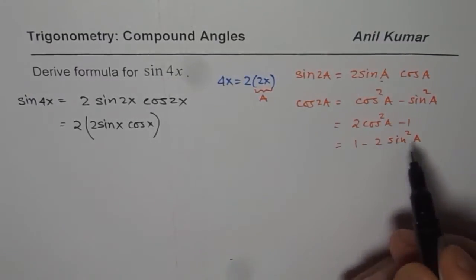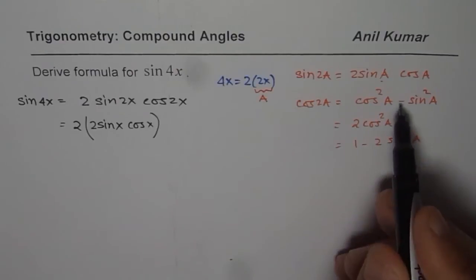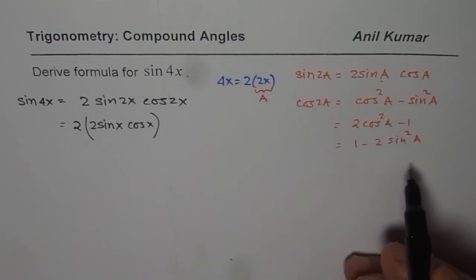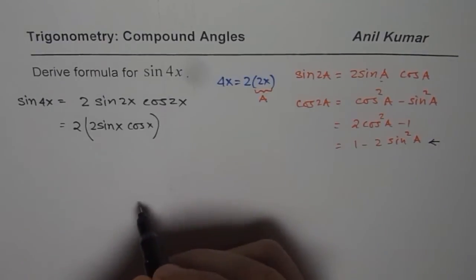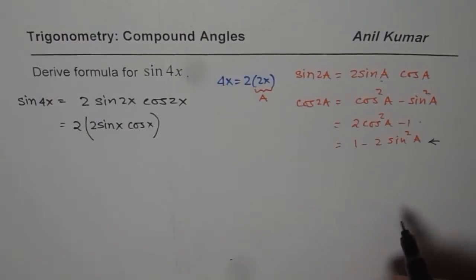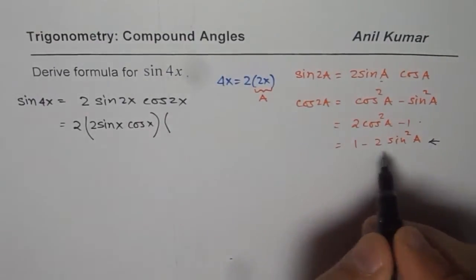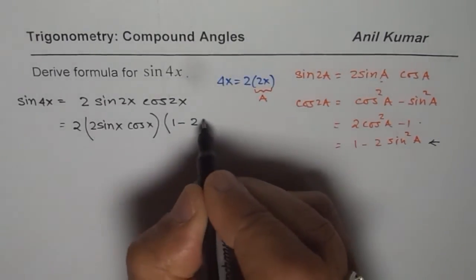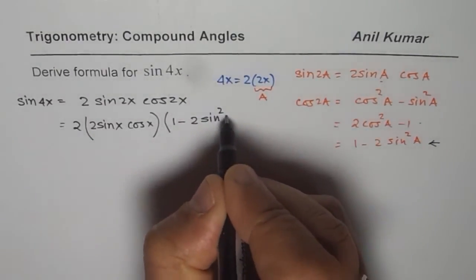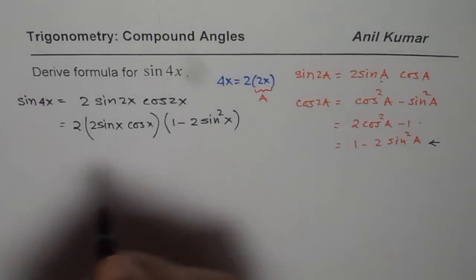Now cos 2x. Cos 2x can be written in any one of these forms. Depending on which form you use, you will get a different formula. In my example, I will use the last one. You can do the same question using the first two forms to derive the other formulas. For cos 2x, I will write this as 1 minus 2 sin²x.